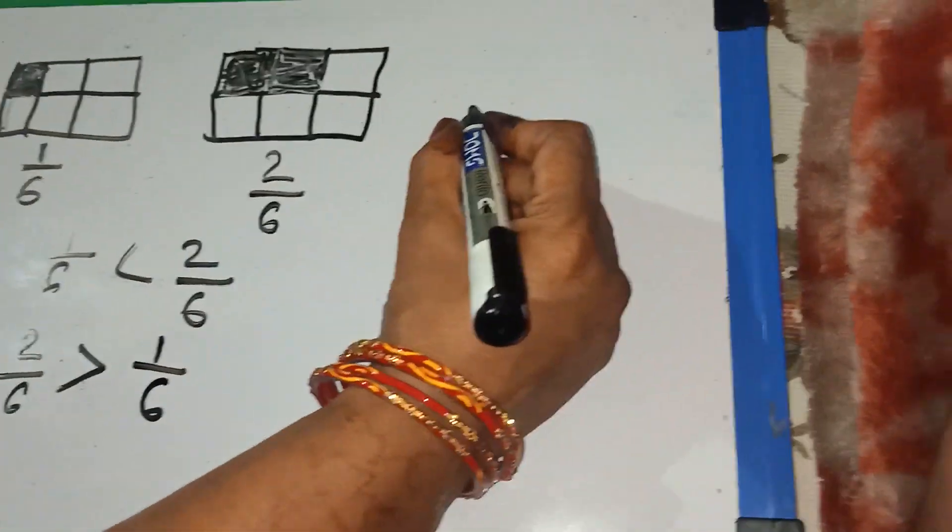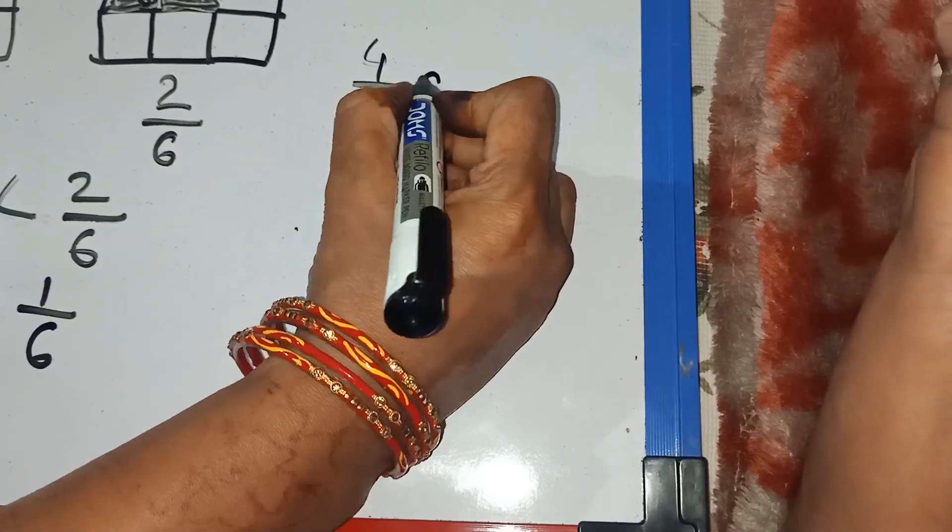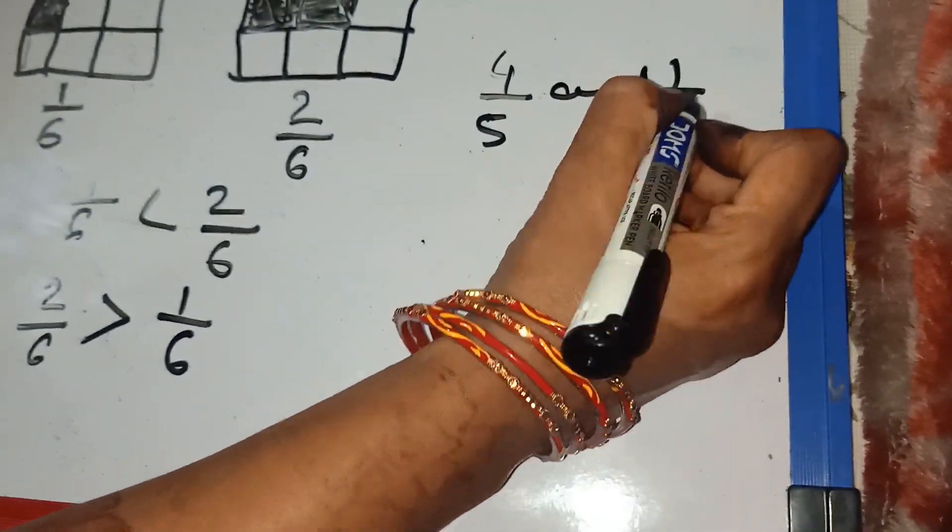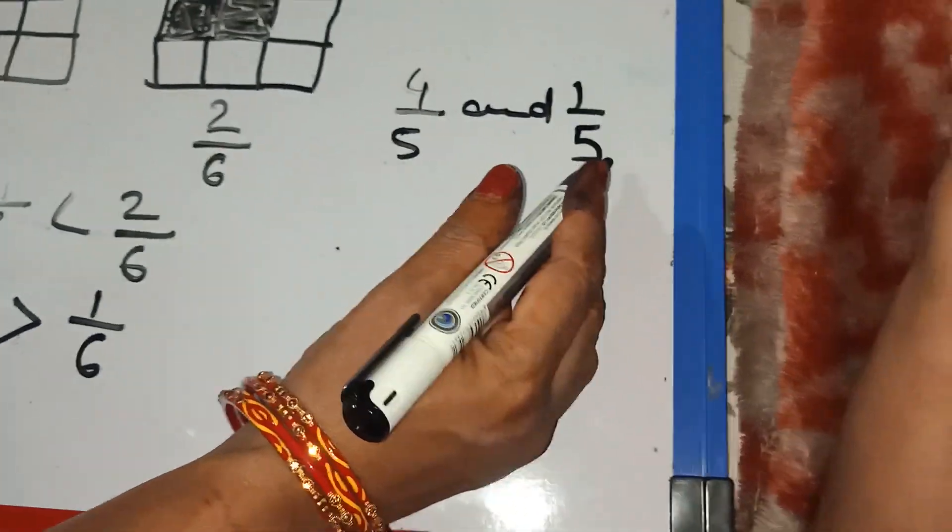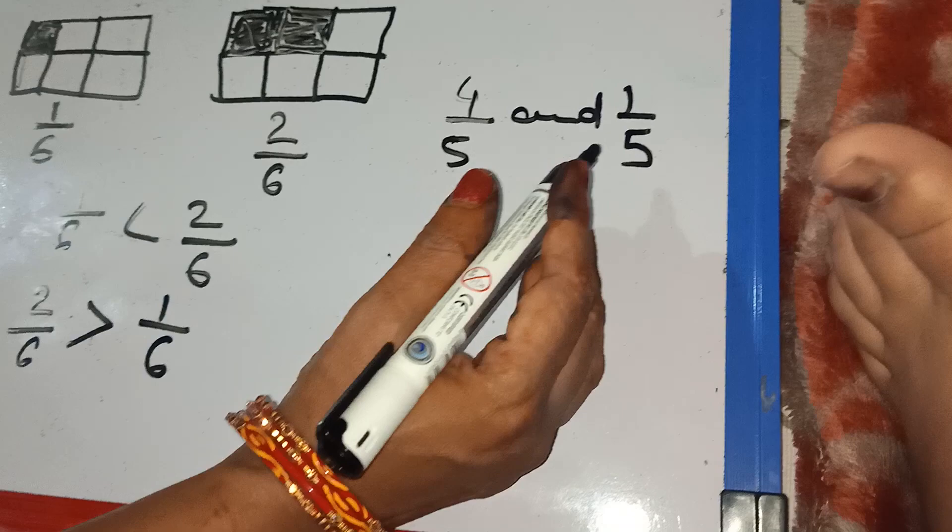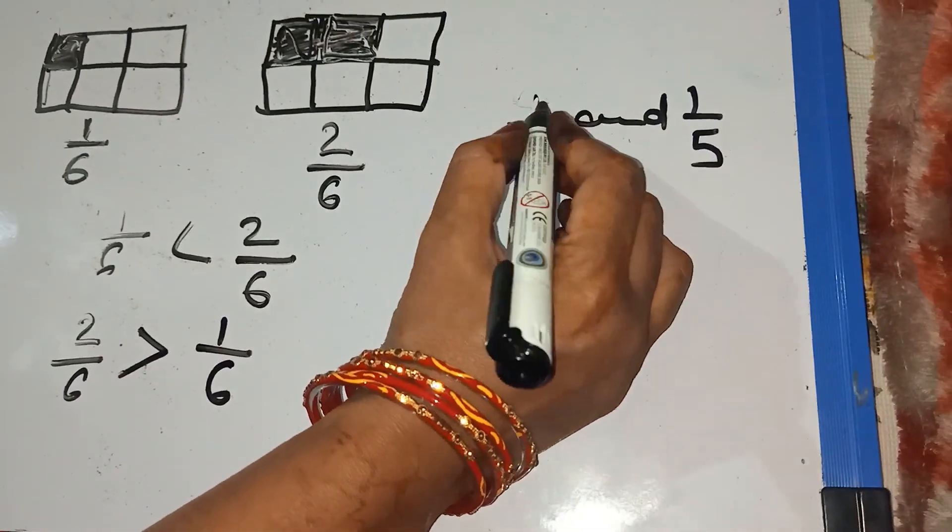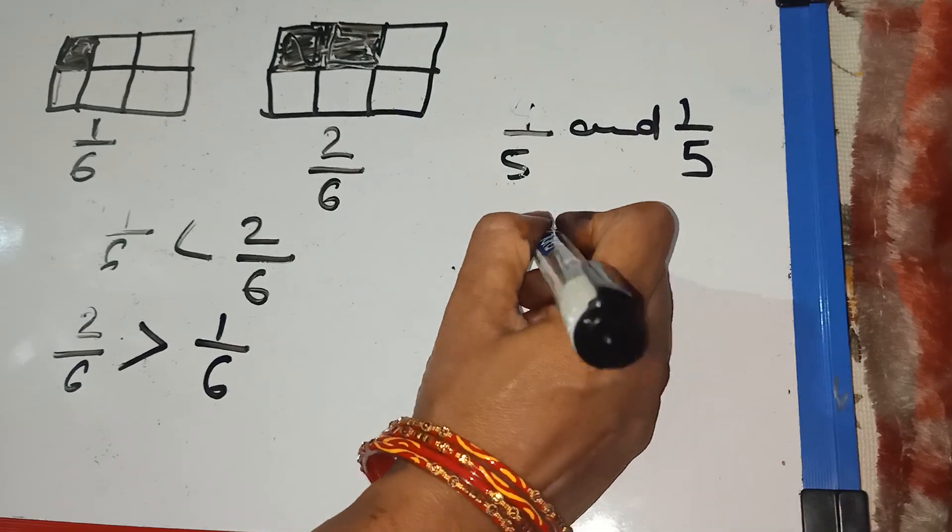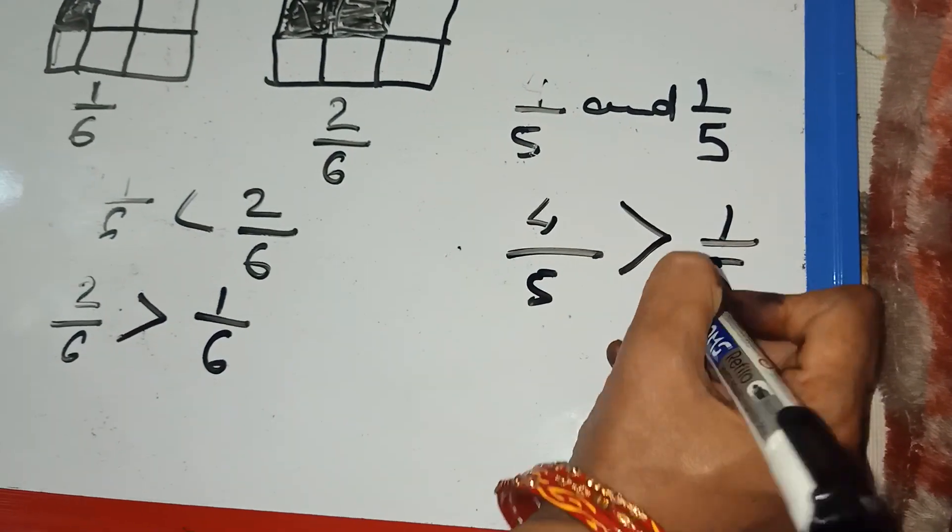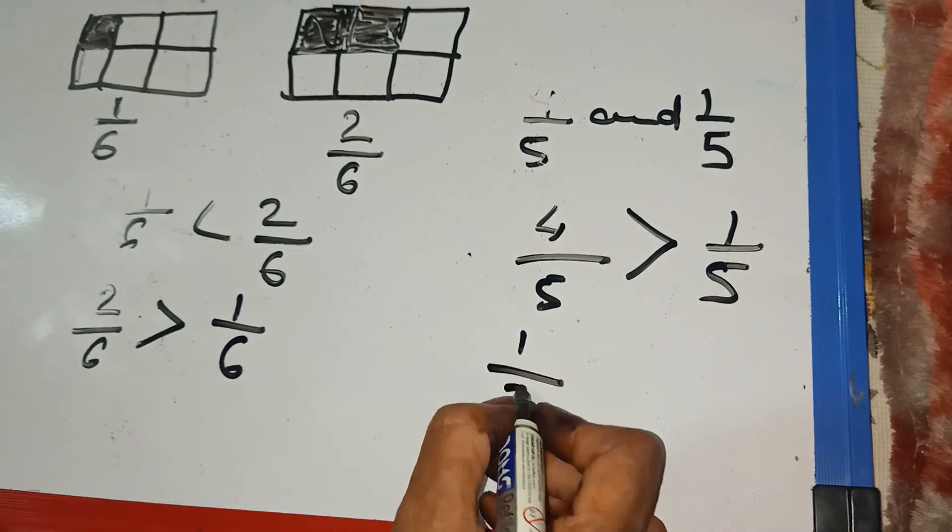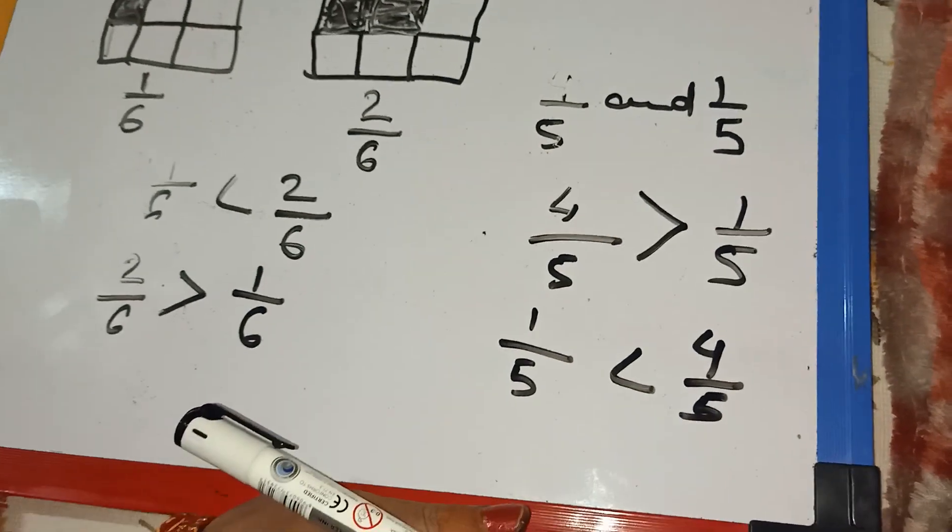And suppose again, I am taking one more sum. So, children, you see the same number in denominator. So, how can we do? By seeing the numerator. Here, 4 is greater. So, we can write 4 by 5 greater than 1 by 5. Or, 1 by 5 is smaller than 4 by 5.